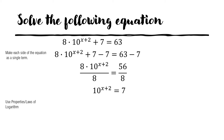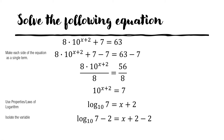On the second step, we use the properties or laws of logarithm. We transform this exponential equation into a logarithmic equation. The base is 10, the argument is 7, so we have: logarithm of 7 base 10 equals x plus 2. We can now isolate the variable. We subtract both sides by 2, and the value of x is log base 10 of 7 minus 2. Using a calculator, that is approximately equal to negative 1.15.